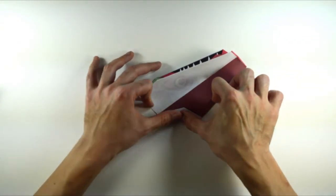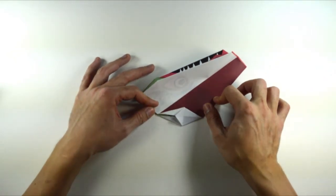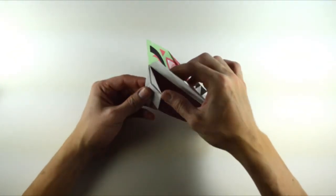Fold it in half. Now, fold it back up, and this forms a frog base, although some people will call it a petal fold.